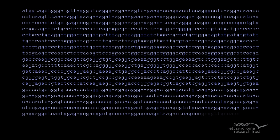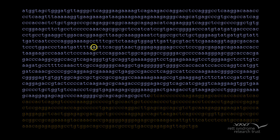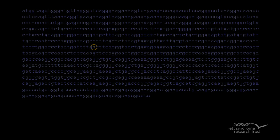A gene mutation is a permanent change in the DNA sequence. Mutations range in size from only one base to a large segment of DNA comprising many genes. By changing a gene's instructions for making a protein, a mutation can cause the protein to malfunction or to be missing entirely. Mutations fall under several categories.